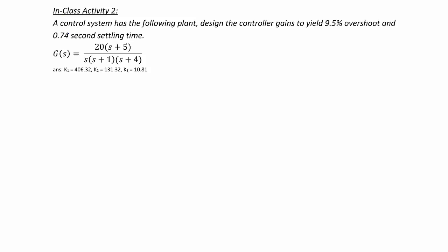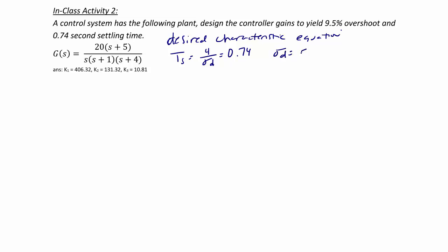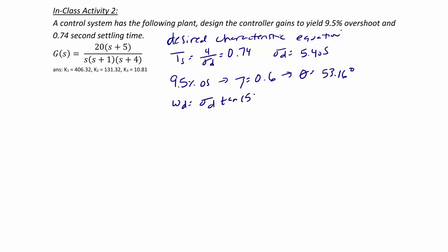The first thing we need to do is derive the desired closed loop characteristic equation. The settling time is 4 over sigma D, which equals 0.74, so sigma D is equal to 5.405. The 9.5% overshoot yields a zeta equal to 0.6 and a theta equal to 53.16 degrees.